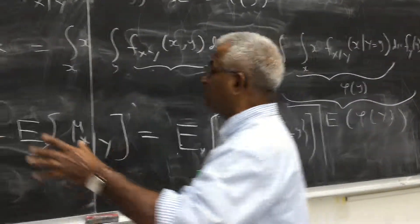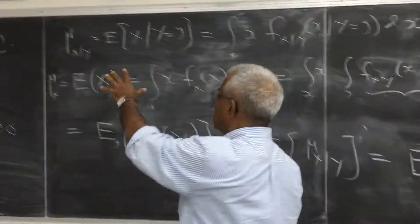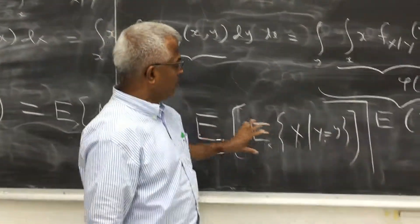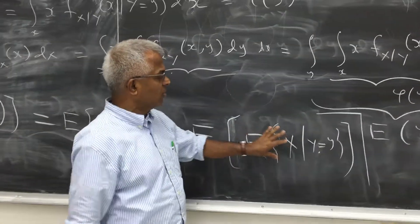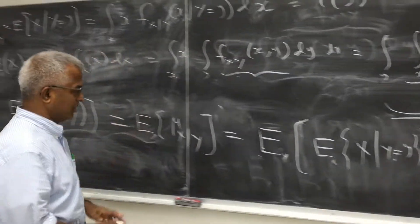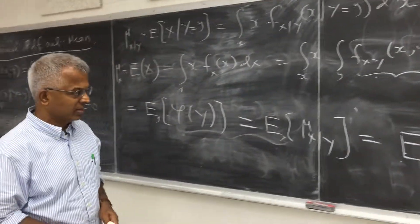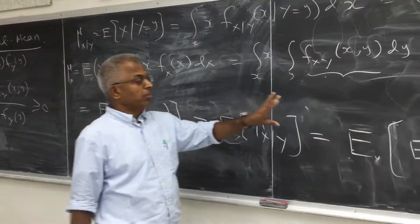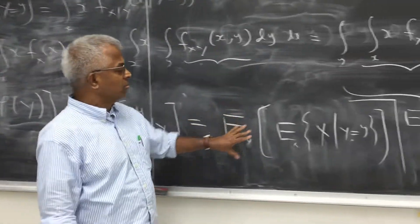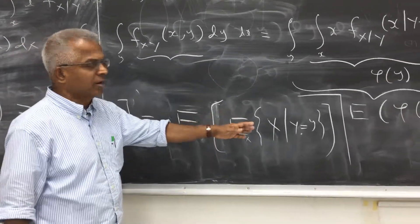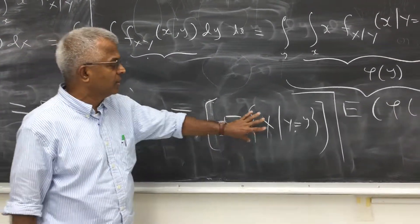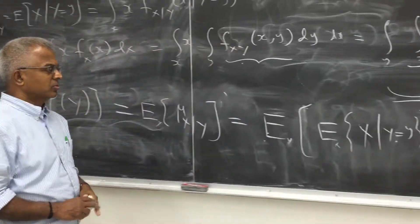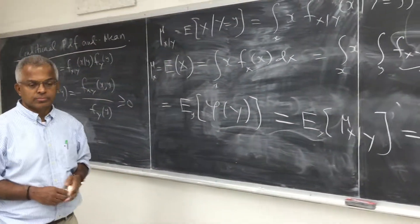So the bottom line is: the expected value of X equals the expected value of the expected value of X given Y. In other words, the conditional mean, once you average and take out the conditional, you get the unconditional mean. That's the relation between the two.